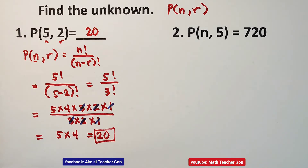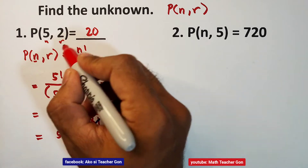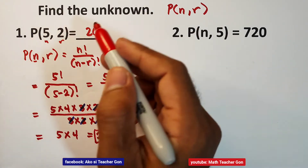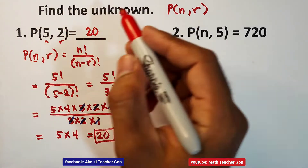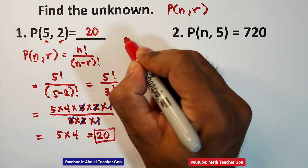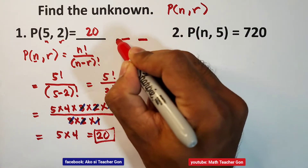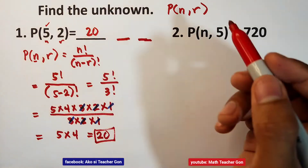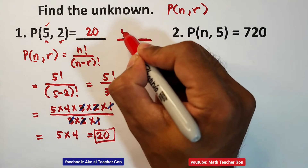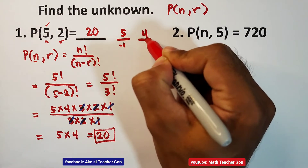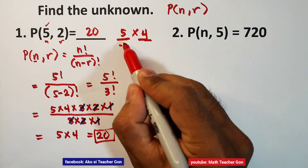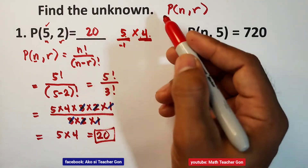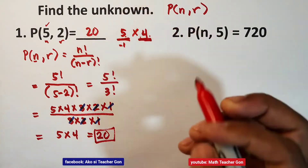There is another method. Using r and n equals 5, we have r equal to 2, so we use 2 numbers. Starting from n, which is 5, subtract 1 to get 4, then multiply. Using r, we take 2 numbers: 5 times 4, which equals 20.